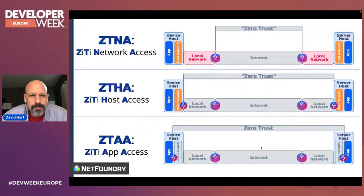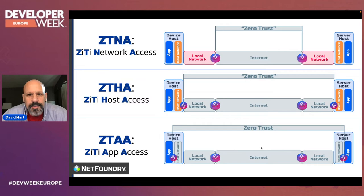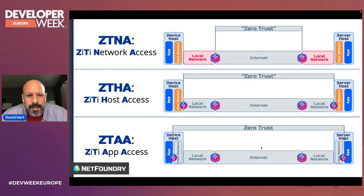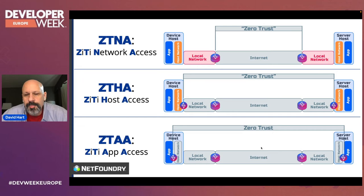When people deploy OpenZD, it's deployed in different ways. ZTNA — zero trust network access — is where ZD edge routers are deployed on the edges of local networks. Now that violates one core tenant of zero trust — assuming your network is hostile — but you can think of that deployment as a better VPN. Zero trust can be a long journey; you may need to start with a deployment like this. You still have strong identity and least privilege access onto that network, and you can reduce by policy what IP addresses are on the network.